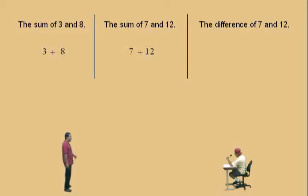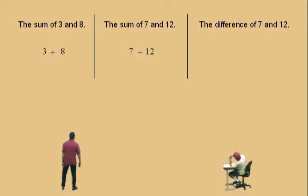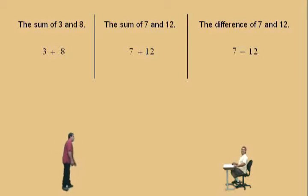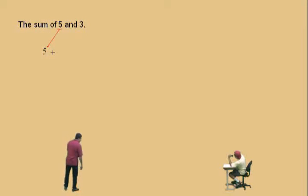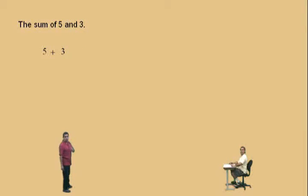Let's do another one. This time we're going to do difference. Now remember, the word sum means addition and difference means subtraction. Okay, Charlie, here we go. The difference of seven and twelve. Very nice there, Charlie. Now let's do another one. The sum of five and three. Now notice here, when you translate there's a specific order that you have to put the numbers in. When you have the sum of five and three, notice the five comes first and then the three.